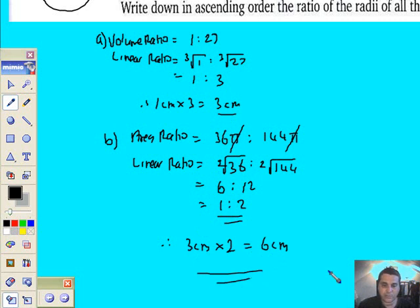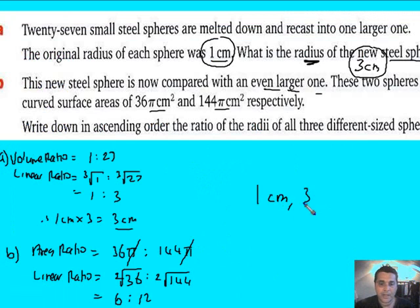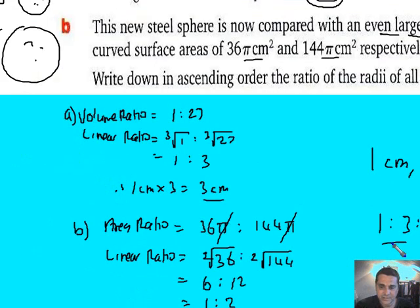Now, put it all together in ascending order. I go 1 centimetre, 3 centimetres, 6 centimetres. There's the ratio in its simplest form: 1 to 3 to 6.